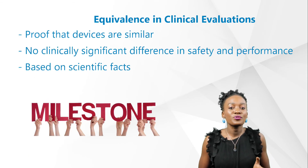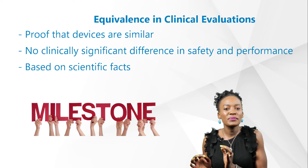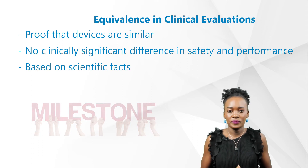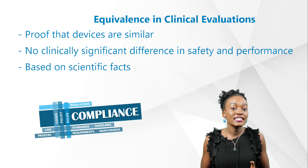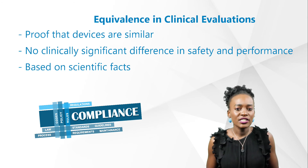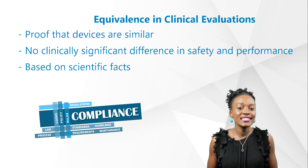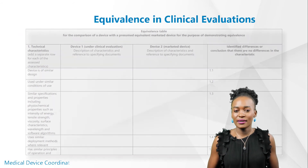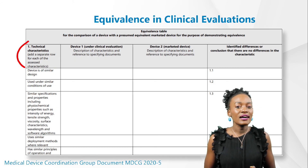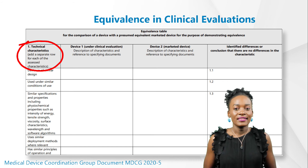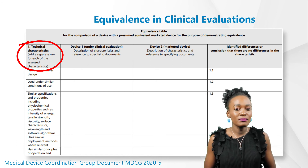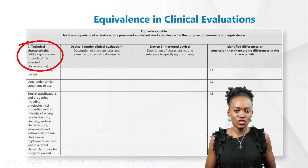To demonstrate the equivalence of medical devices, the manufacturer needs to prove that they are similar to the extent that there would be no clinically significant difference in the safety and clinical performance of the device. Considerations of equivalence should be based on proper scientific justification. To support manufacturers, the working group created an equivalence table. The first column contains examples of items considered — these must not be interpreted as an exhaustive list of specifications, properties, parameters, or aspects for demonstrating equivalence.